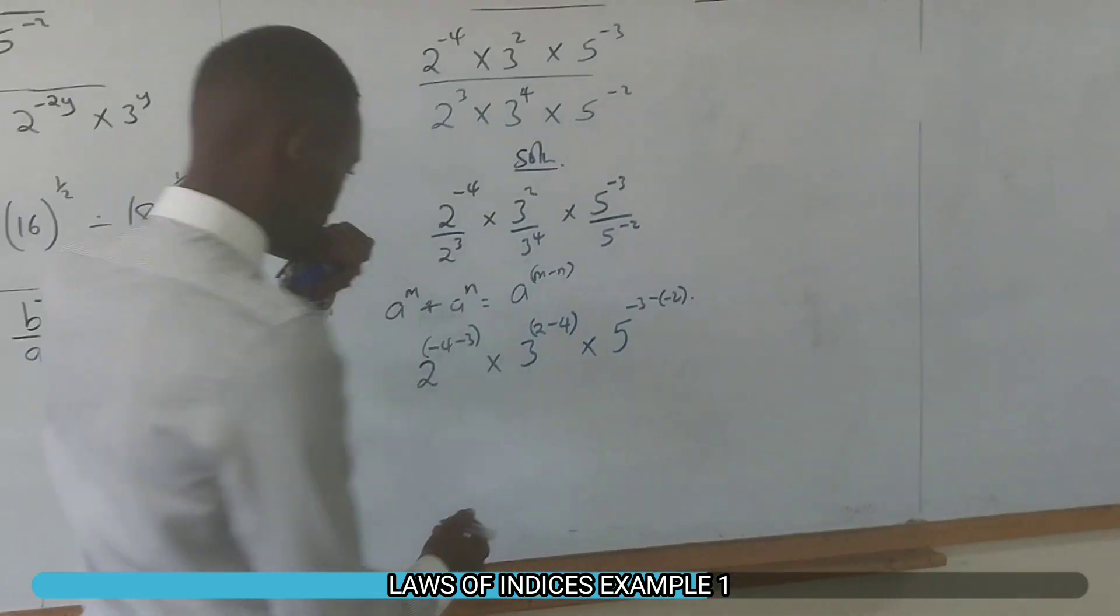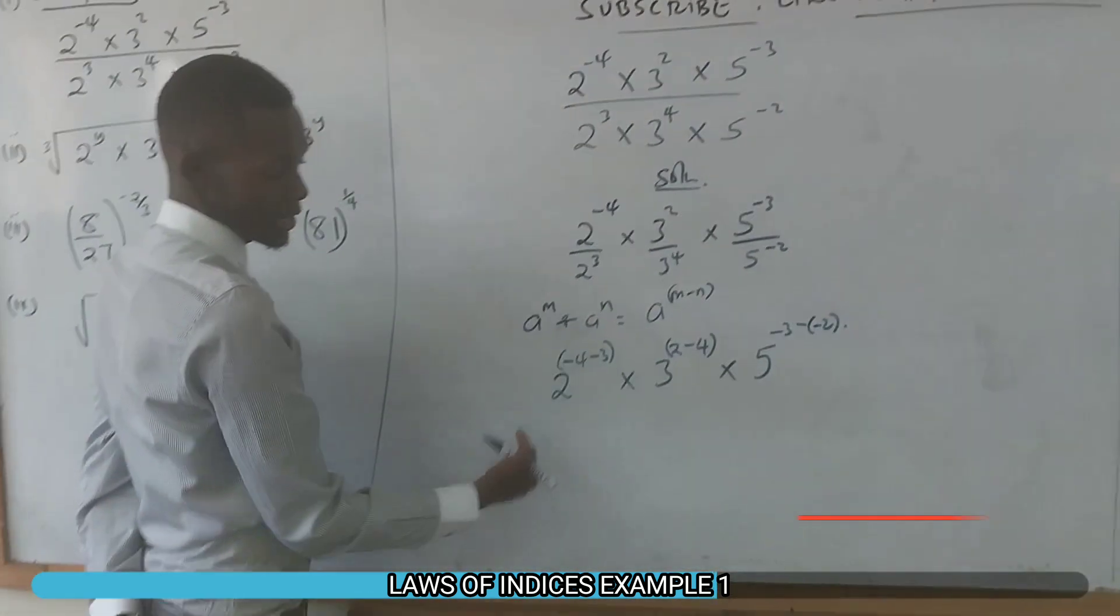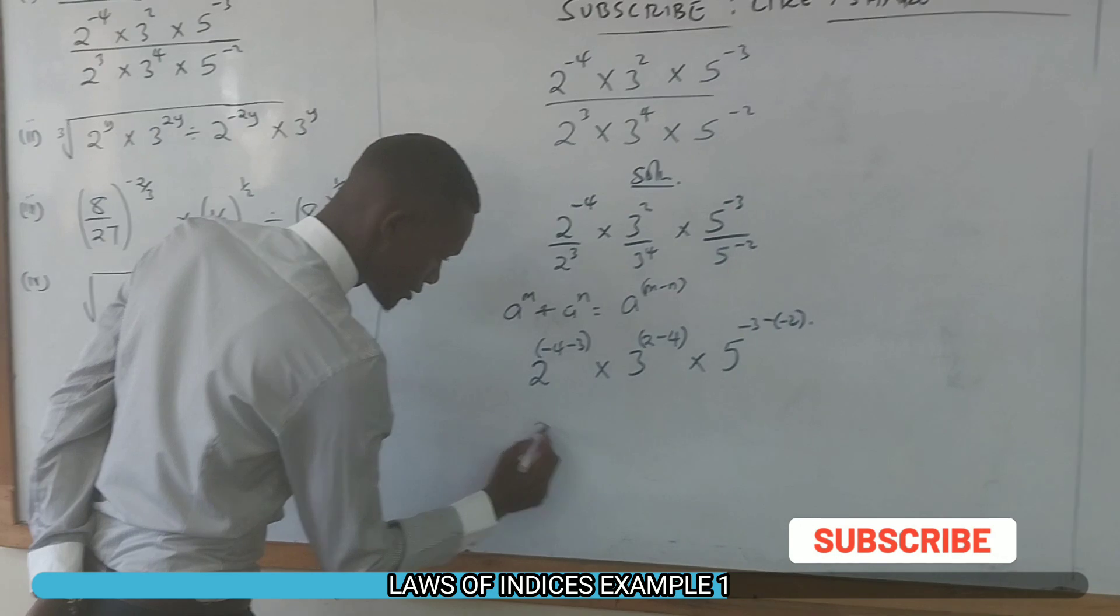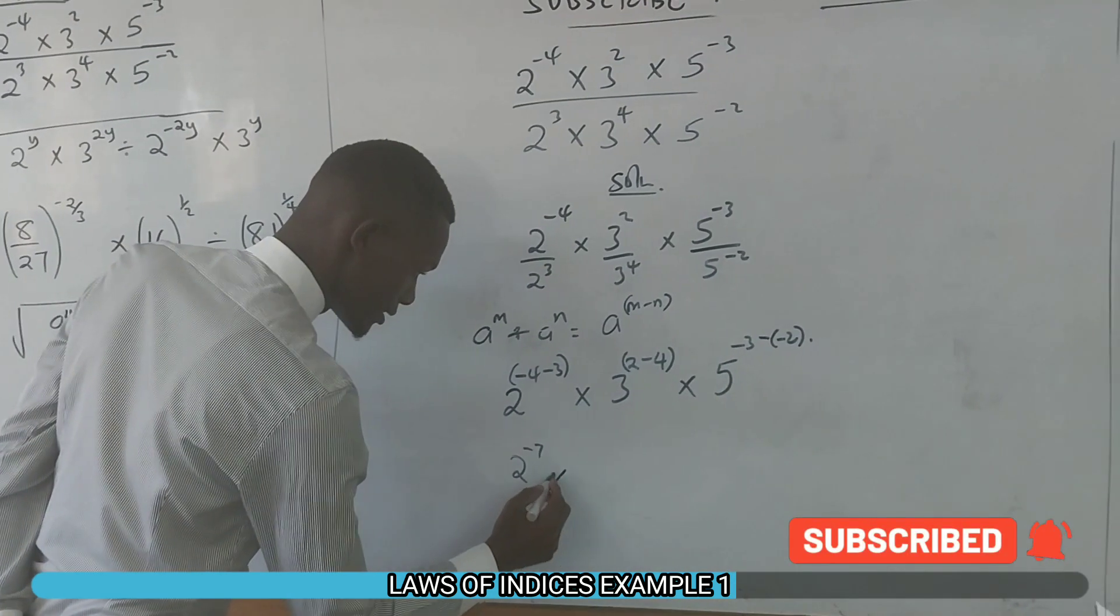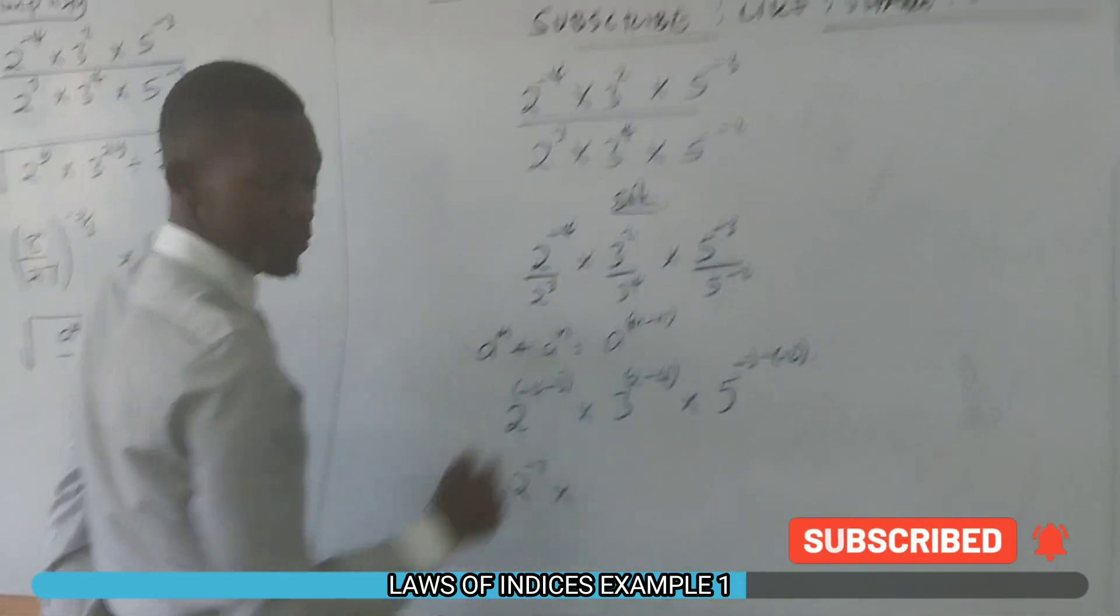Therefore, we have -4 minus 3 equals -7, so 2^-7 times... 2 minus 4 is -2, so 3^-2.